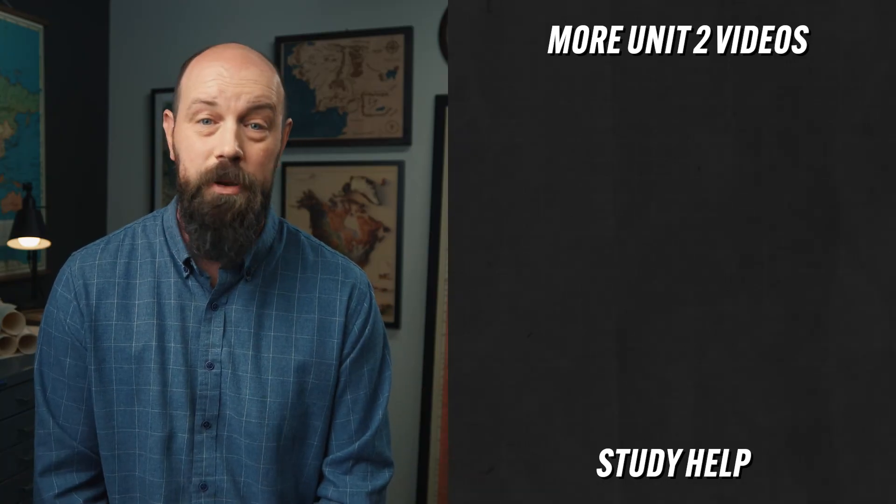Since this is the end of the unit, you might want to click here and grab my AP Human Geography Heimler Review Guide, which has everything you need to get an A in your class and a 5 on your exam in May. Also, you can click here to check out my other Unit 2 videos. Now I'll catch you on the flip-flop.